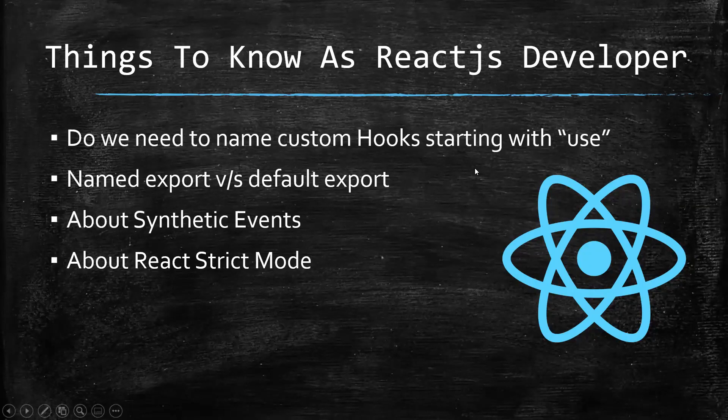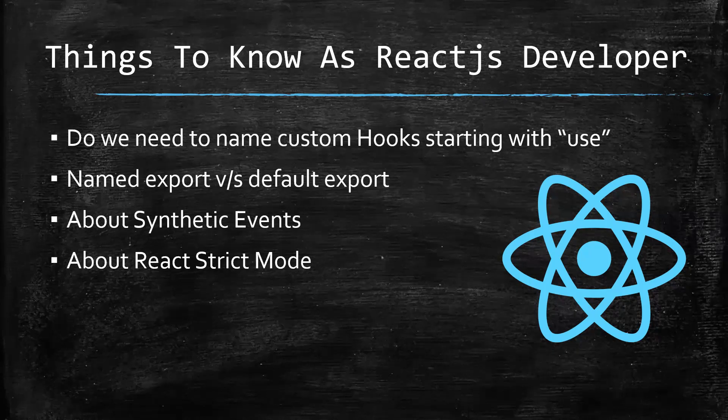So this covers why we need to name our custom hooks with the 'use' prefix, the differences between named export and default export, synthetic events, and strict mode. Thanks for watching — please subscribe for more videos.